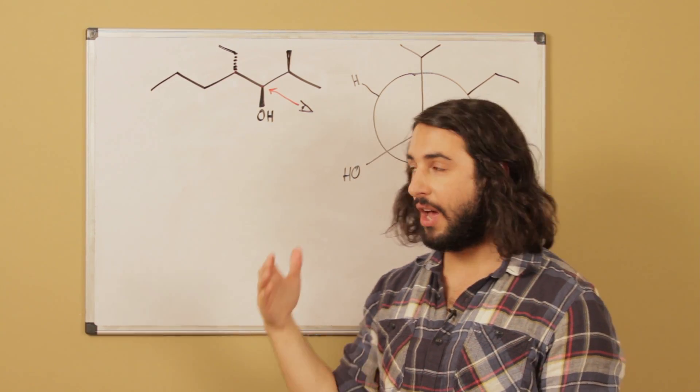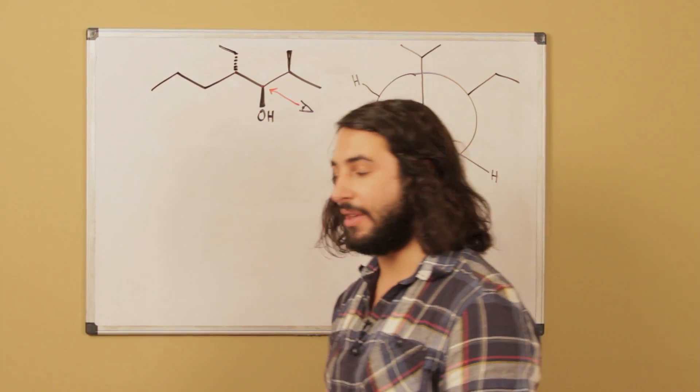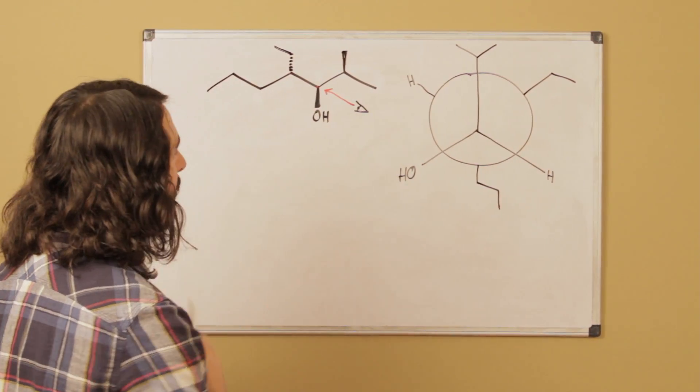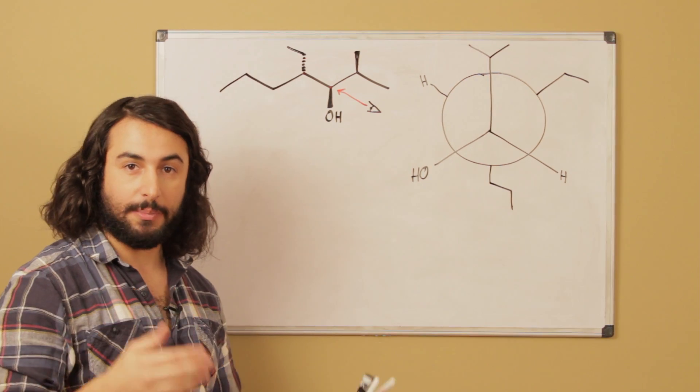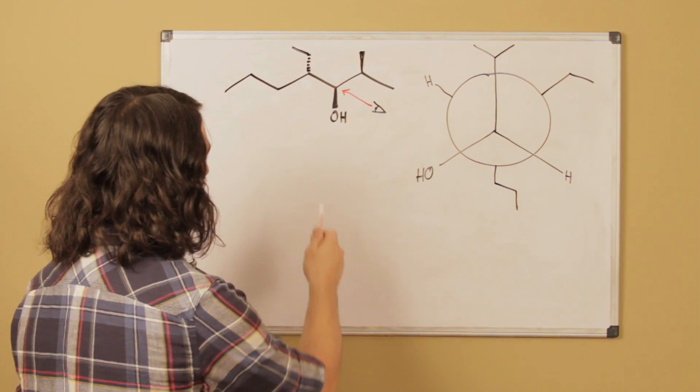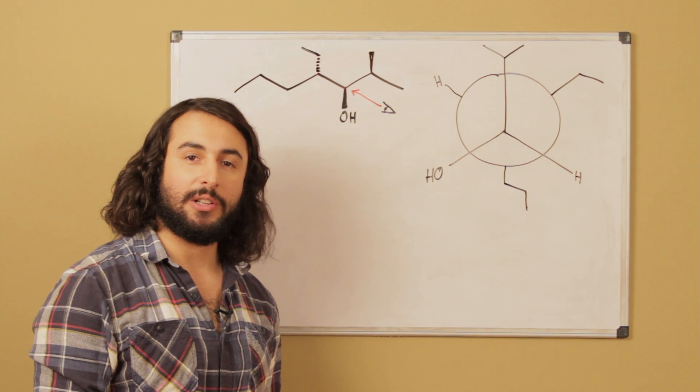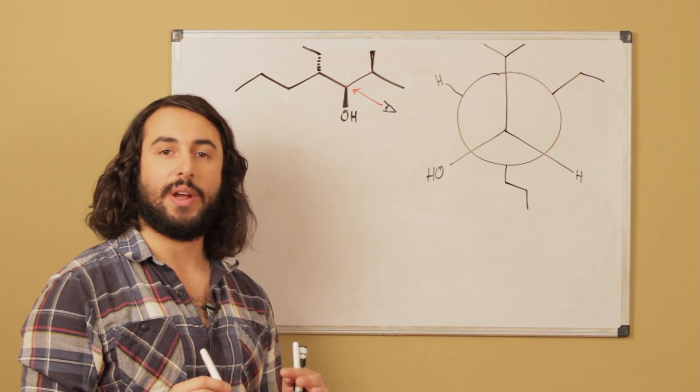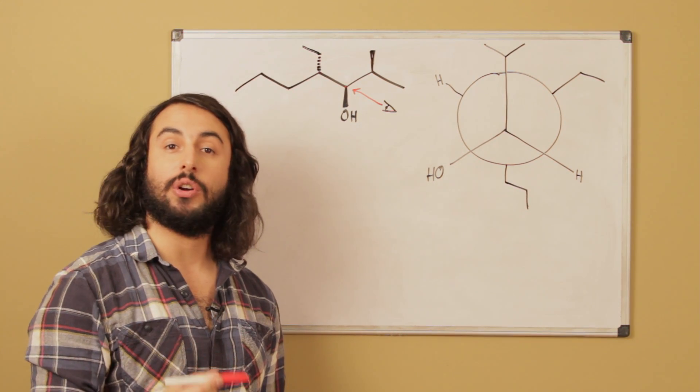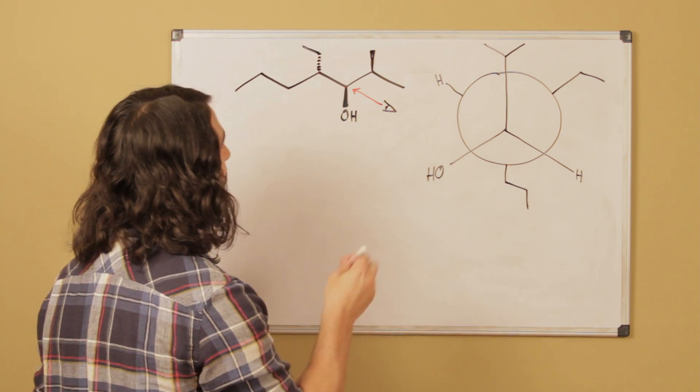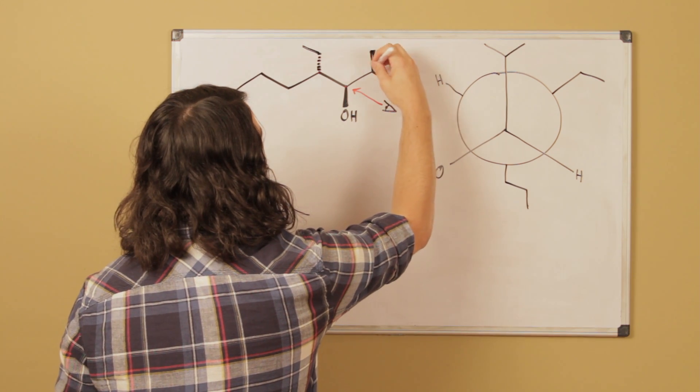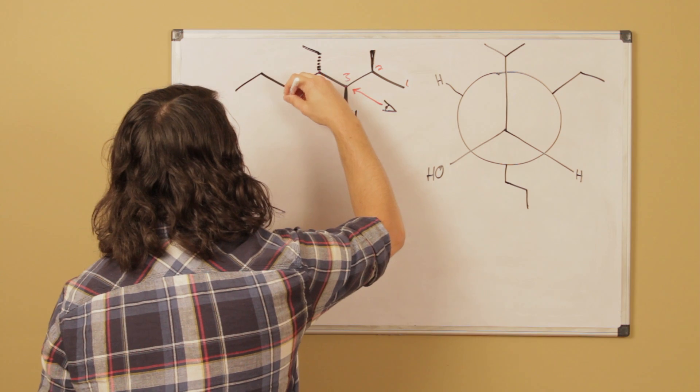So there's the correct Newman projection for what we have drawn. Now we also want to be able to name this. So whenever we're going to name a molecule, the first thing we need to do is number the parent chain. And so for the hydroxyl group, the hydroxyl group is the highest priority group on this molecule. So we need to number in such a way so as to give the hydroxyl occurring soonest. On this molecule, that is going to be right to left. So that is going to be our numbering scheme there.